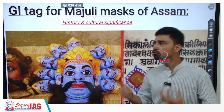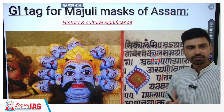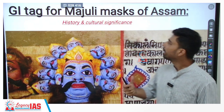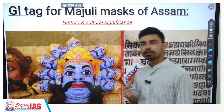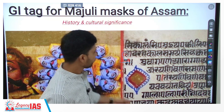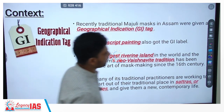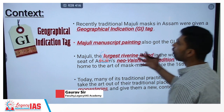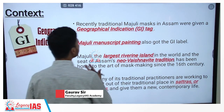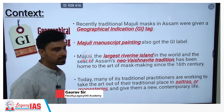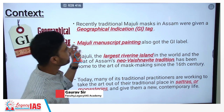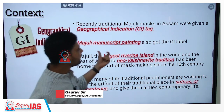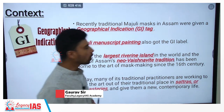Majuli is a region of Assam. Recently, traditional Majuli masks in Assam were given a geographical indication tag. The Majuli manuscript painting, apart from the mask, also got the GI label.